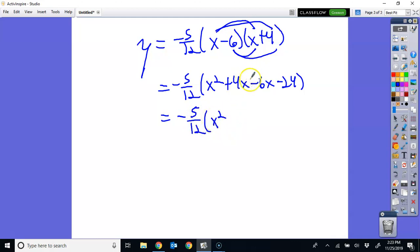So then you have negative 5 over 12 here. x squared, 4x and negative 6x is negative 2x. And then we distribute the negative 5 over 12. If you distribute the negative 5 over 12, that's going to be negative 5 twelfths x squared. Negative 5 over 12 times negative 2 is going to be positive.